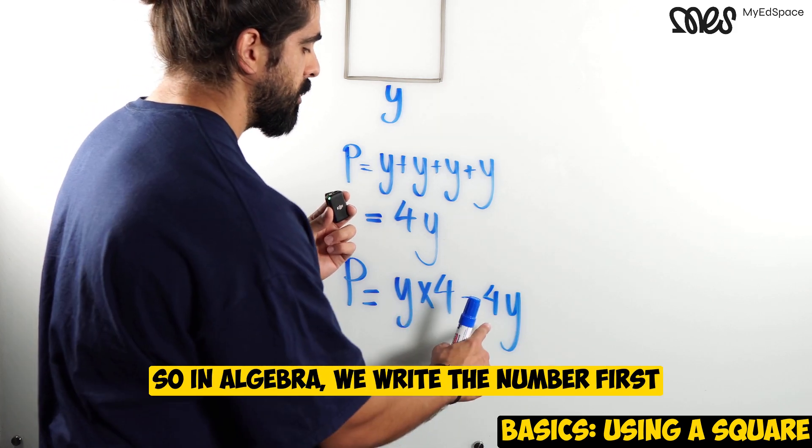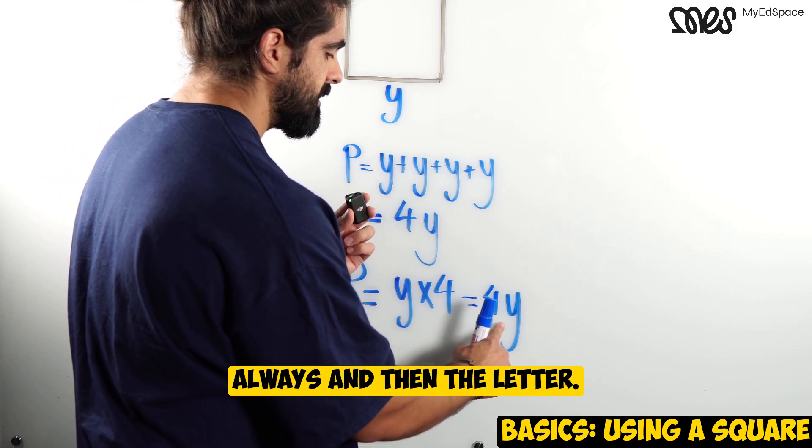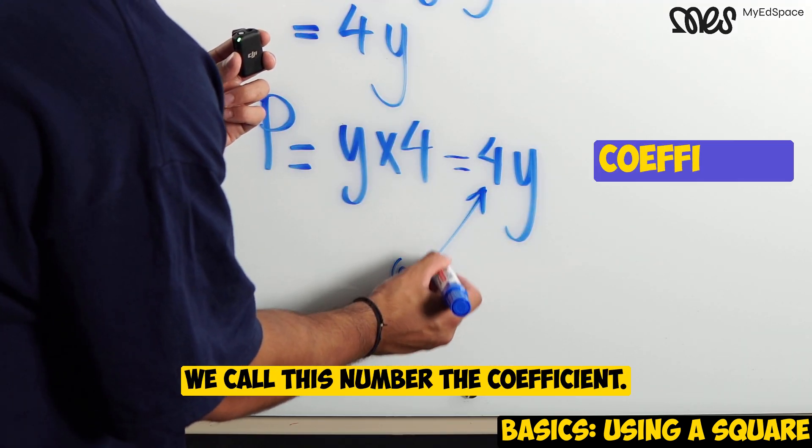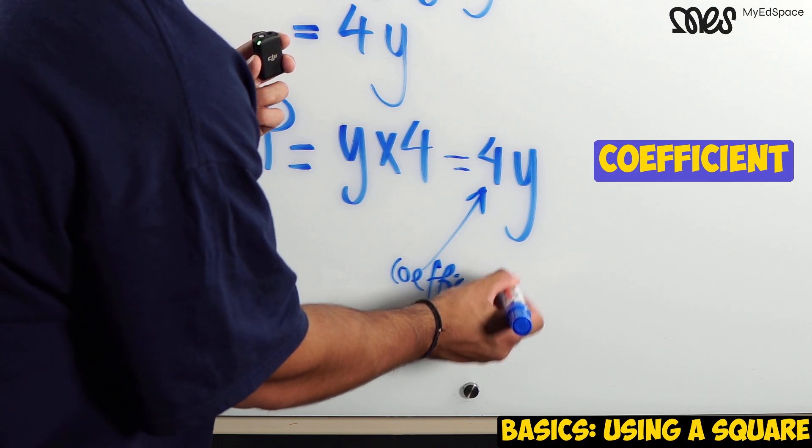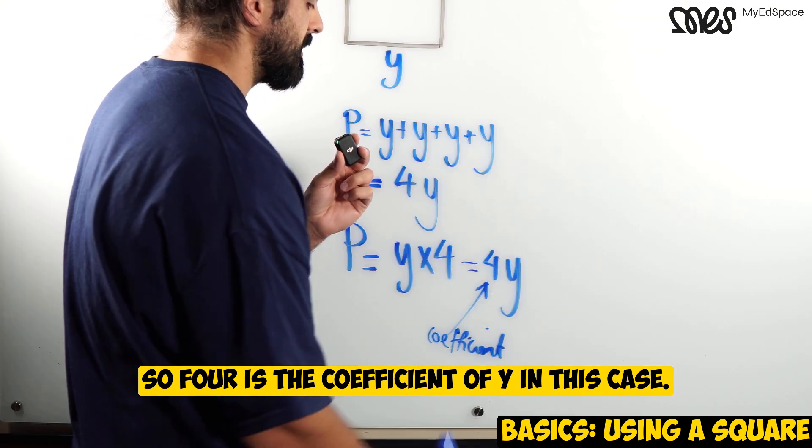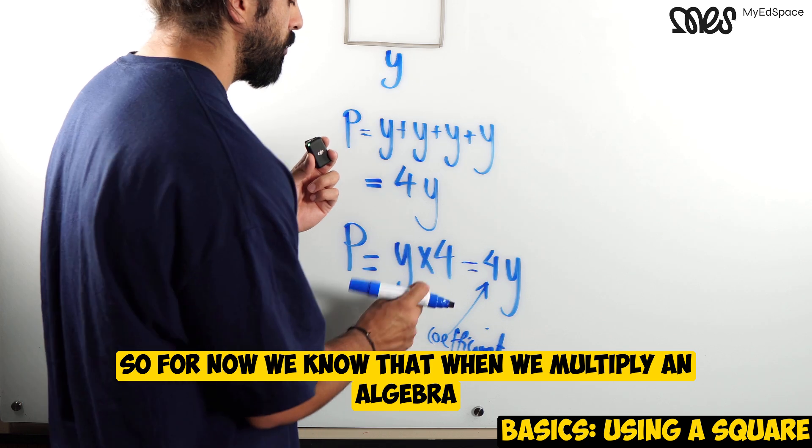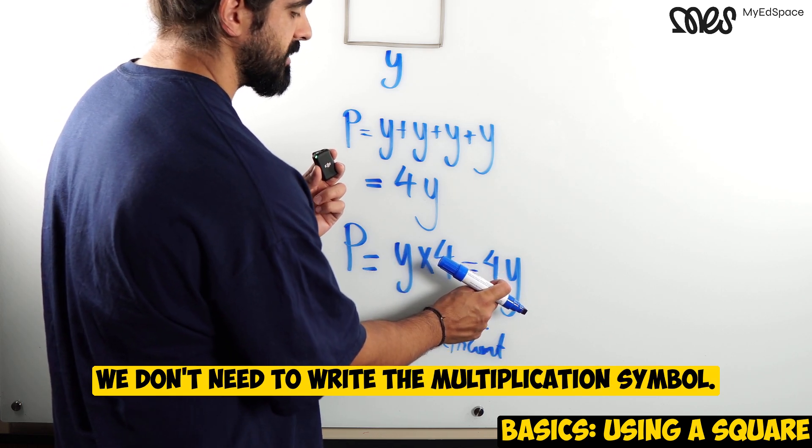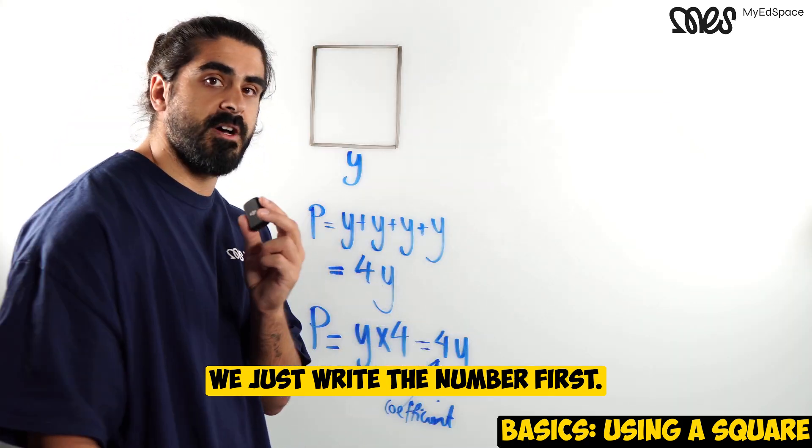So in algebra, we write the number first, always, and then the letter. We call this number the coefficient. It's the coefficient of whichever letter we're talking about. So 4 is the coefficient of y in this case. So for now, we know that when we multiply in algebra, we don't need to write the multiplication symbol. We just write the number first.